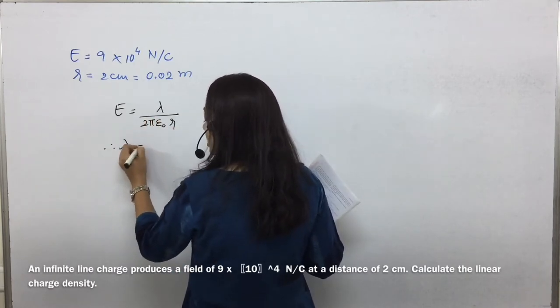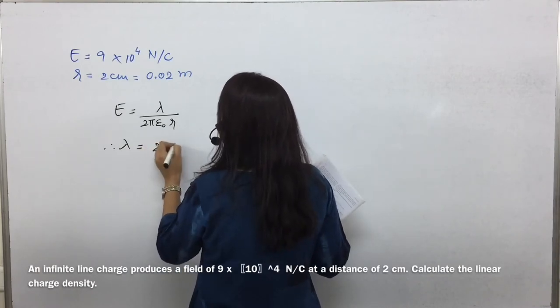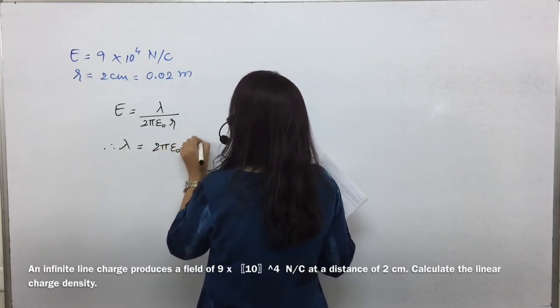But we need the line charge density lambda. So that will be equal to 2π epsilon₀ r into E.